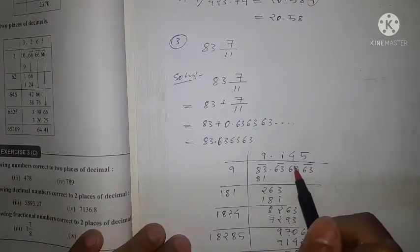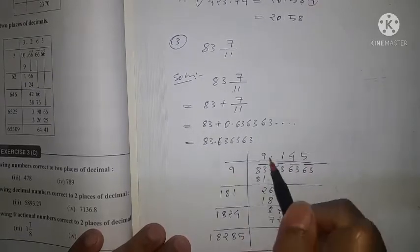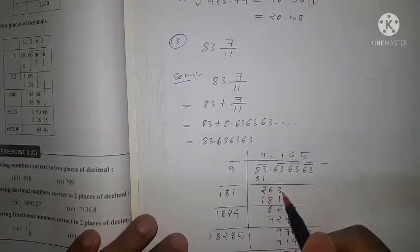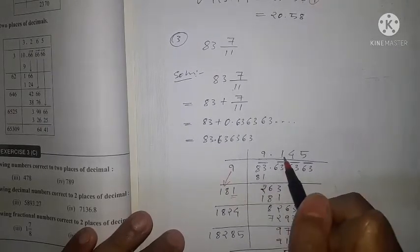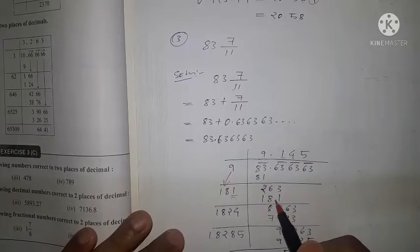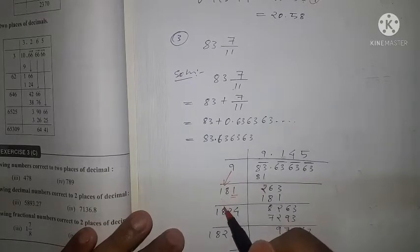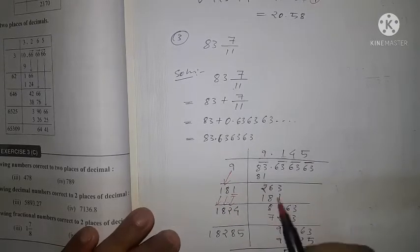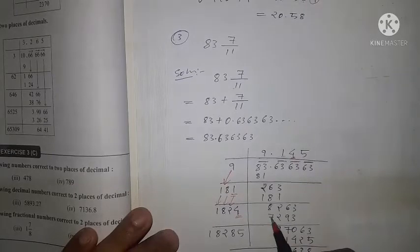Making pairs after the decimal: 83 | 63 | 63 | 63. Nine squared is 81, remainder 2. Then 63 comes down, making 263. This 9 is doubled to 18; we take 1 here, giving divisor 181. So 181 × 1 = 181, remainder 82. Then the next 63 comes down; the 1 is doubled to 2, giving 1824. So 1824 × 4 = 7293.